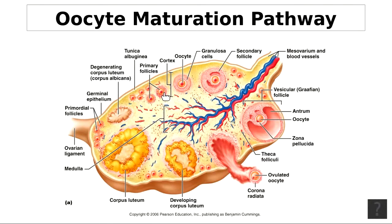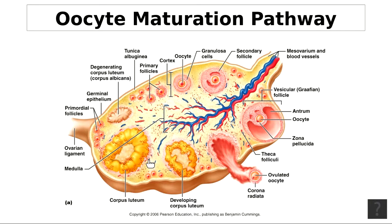Something called the vesicular follicle — formerly called the Graafian follicle, the new term is vesicular — is a mature ovum and its surrounding tissues. The cells around the ovum are called follicular cells, which secrete hormones. After ovulation, when the egg leaves, the cells left behind become the corpus luteum — C-O-R-P-U-S L-U-T-E-U-M — which produces progesterone and estrogens. It means 'yellow body.'